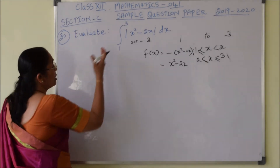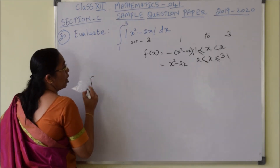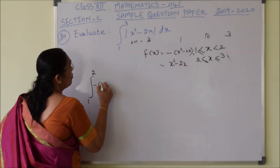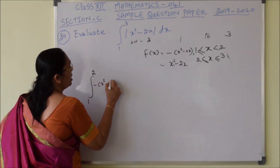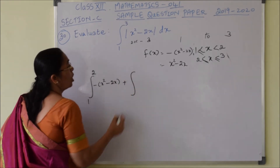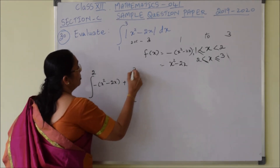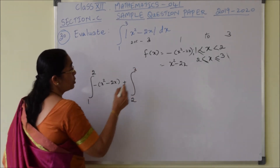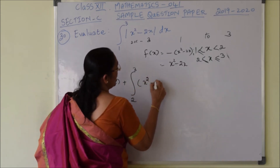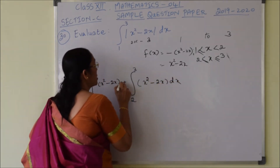Now we split the integral: integration from 1 to 2 of negative (x squared minus 2x) dx, plus integration from 2 to 3 of positive (x squared minus 2x) dx.